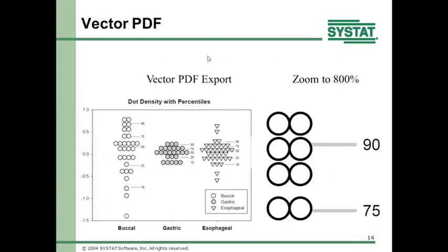The other feature I mentioned is vector PDF, which has been added to 12.5. It's a vector format, so if you zoom in 800% on symbols, the resolution is perfect. Unlike a raster PDF where resolution would degrade tremendously, with vector PDF the resolution is infinitely scalable. The file size is also much, much smaller than raster PDF. And as an aside, it's a standard PDF output on the Mac.